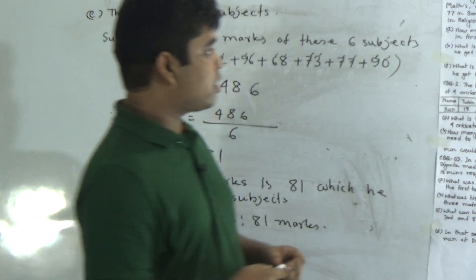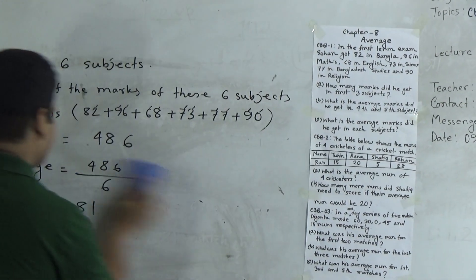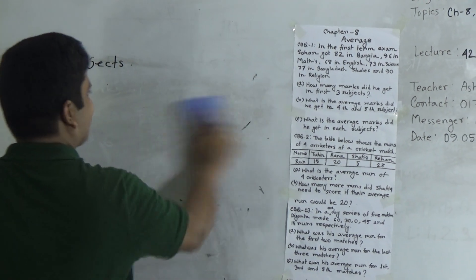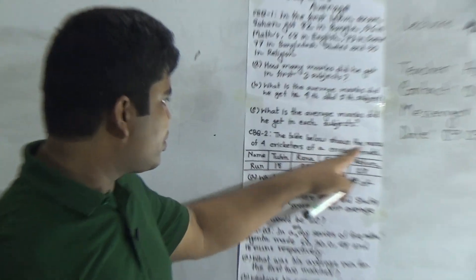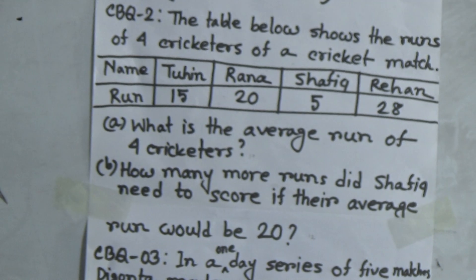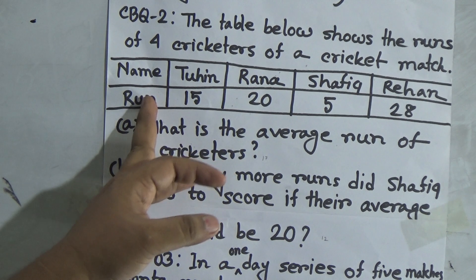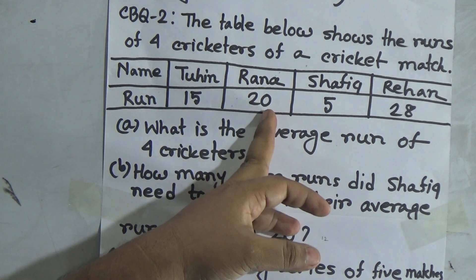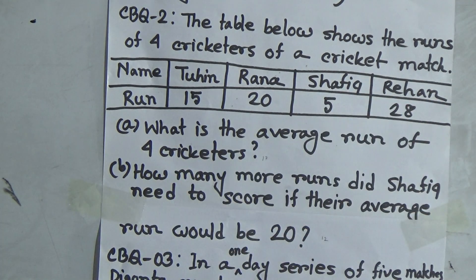This is the solution of CBQ number 1. Next we shall solve CBQ number 2 — and it is so easy. The table below shows the runs of four cricketers in a cricket match. Notice the names and their runs: Tuhin — 15 runs, Rana — 20 runs, Shofik — 5 runs, Rahan — 28 runs.